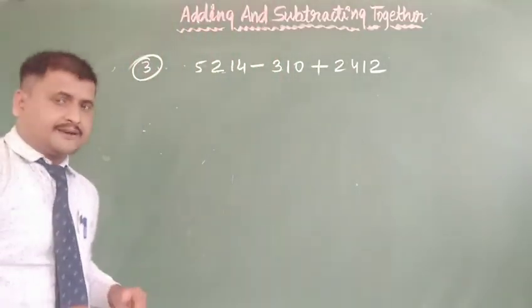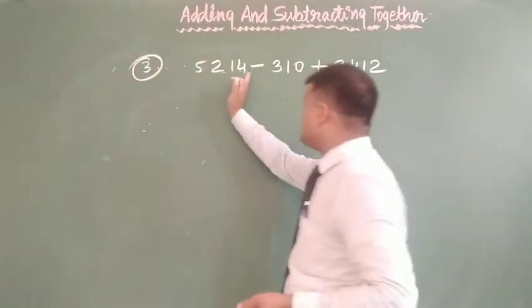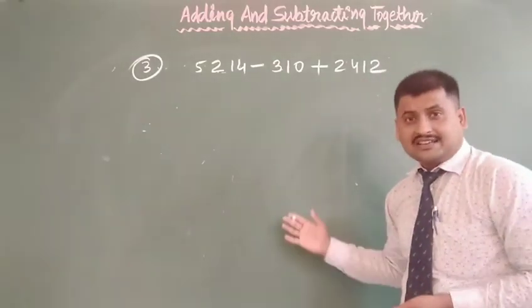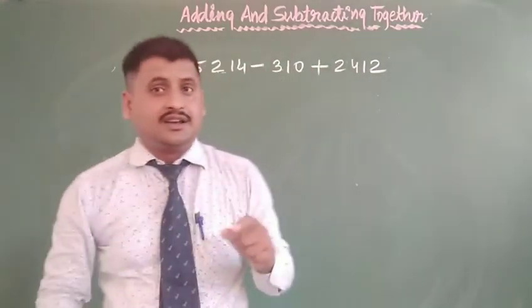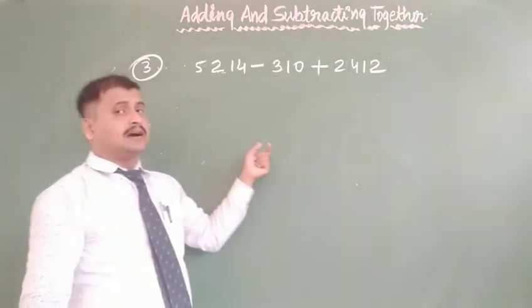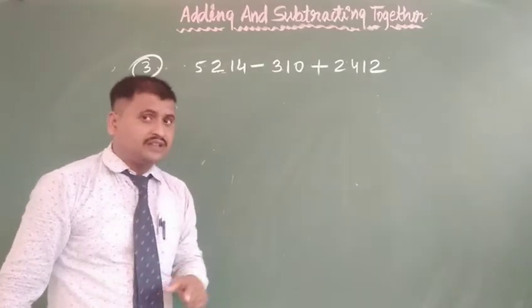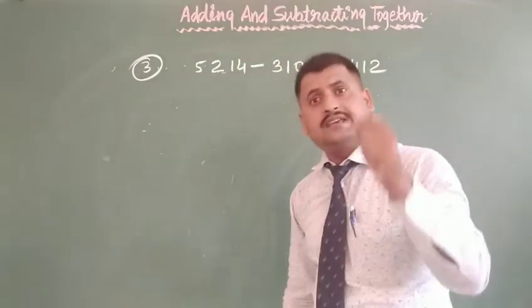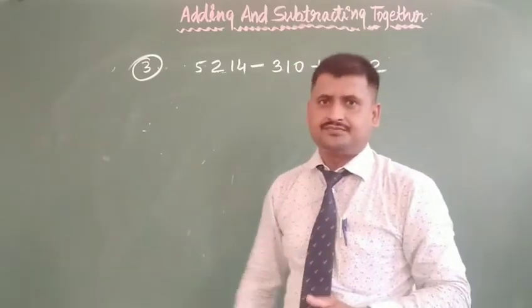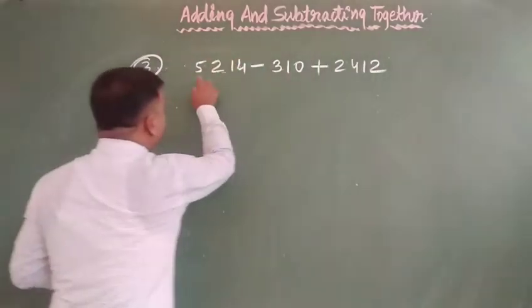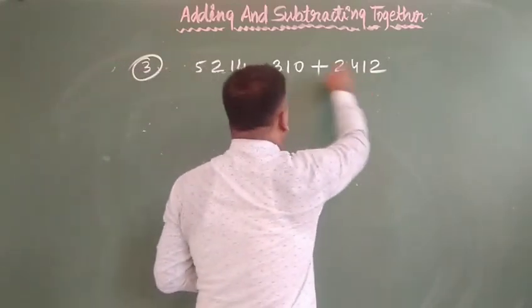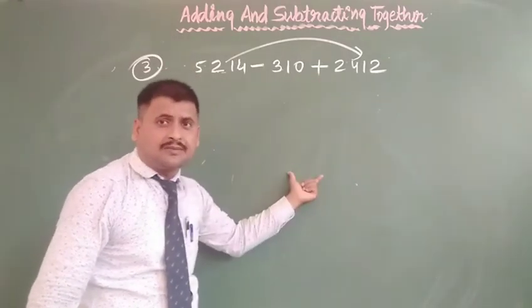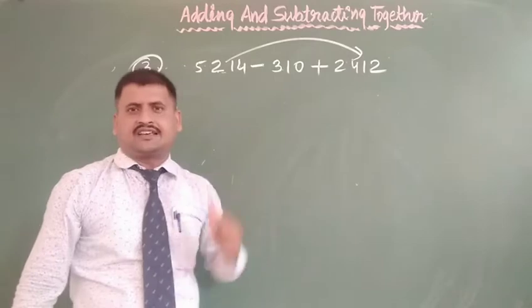Now here, what will we do? First is subtraction given here. Should we do subtraction and then after add? No, never. If we do that, it is completely wrong. Because always we have to do addition in any condition. Always we have to do addition and then after subtraction. So first of all, we have to add 5,214 and plus 2,412. We will add these together, and then we will subtract 310. Understood?